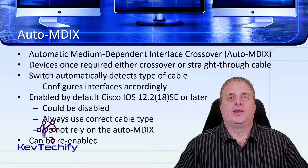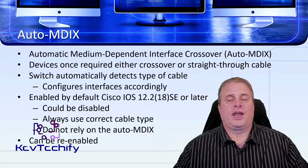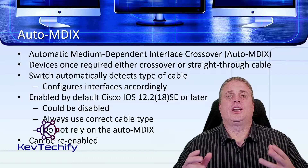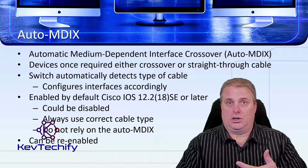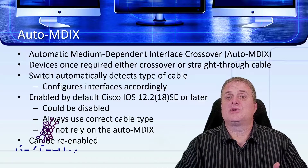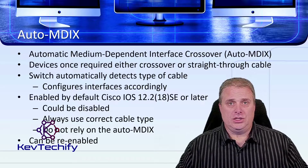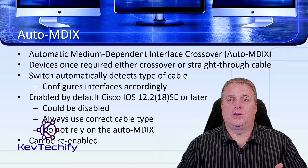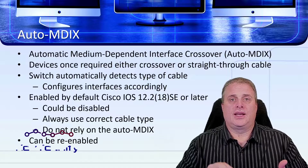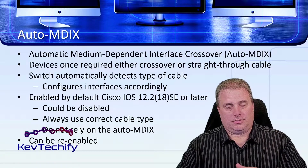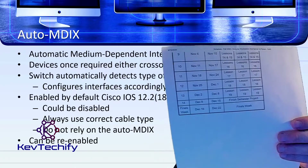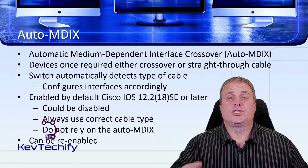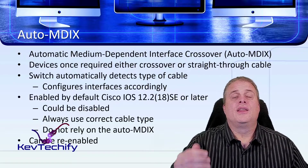Devices once required that you use either the straight-through or crossover cable in order to communicate. For a crossover cable, you use it when connecting like devices: PC to PC, switch to switch, router to router. There is one exception — when connecting a PC to a router, you also use a crossover. All other connections use a straight-through cable. So switch to an end device or switch to a PC is a straight-through. From a PC to a switch is a straight-through. From a switch to a router is a straight-through.